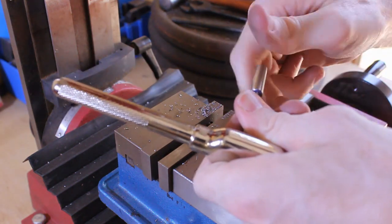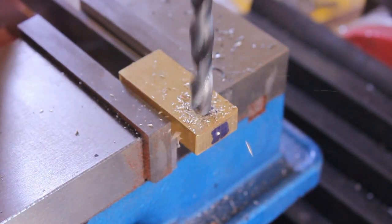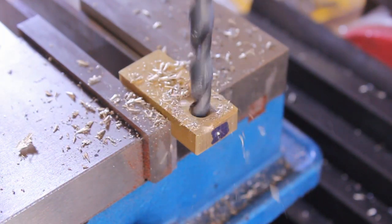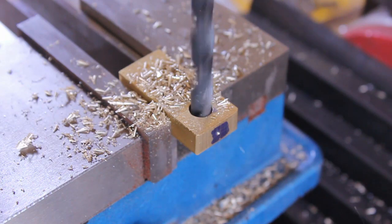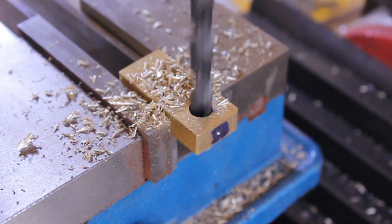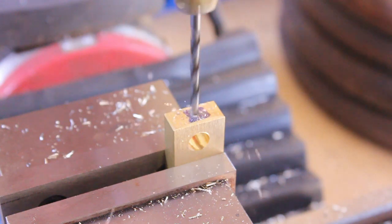I then drilled a five-sixteenths hole into our piece of brass so that the pillar can be inserted, and then after that I'll be drilling the set screw hole and tapping this hole as well to 4 millimeters.